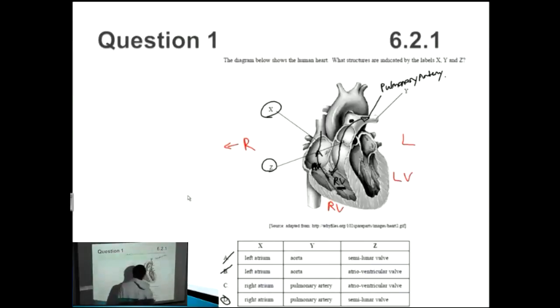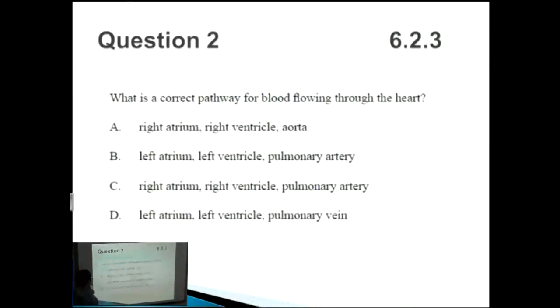So we know that the correct answer is D here. If it was atrioventricular valve, you'd expect the Z to be pointing to somewhere over here, wouldn't you? The valve between the atrium and the ventricle.